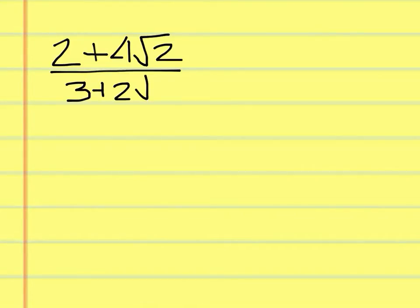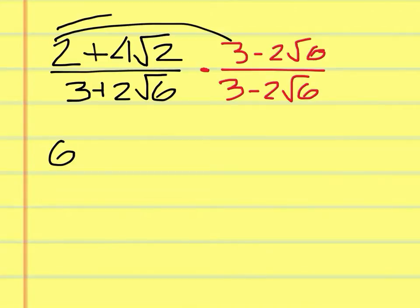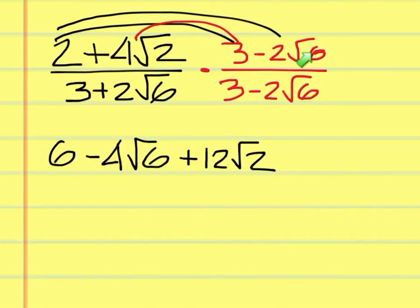This problem is 2 plus 4 square root of 2 over 3 plus 2 square root of 6. We want to get the radical 6 off the bottom, so we multiply the top and the bottom by the conjugate, which is 3 minus 2 square root of 6. On the top, you have to use the FOIL method — the top isn't always going to cancel out; most of the time it's not. So you'll have a trinomial expression with 3 terms: 2 times 3 is 6, 2 times minus 2 square root of 6 is minus 4 square root of 6, then 4 square root of 2 times 3 is 12 square root of 2, and then 4 square root of 2 times minus 2 square root of 6 gives minus 8 square root of 12.